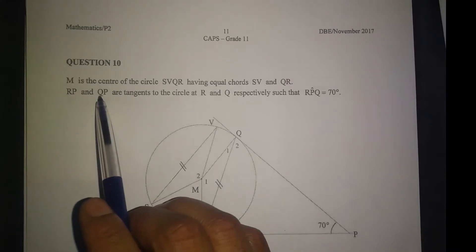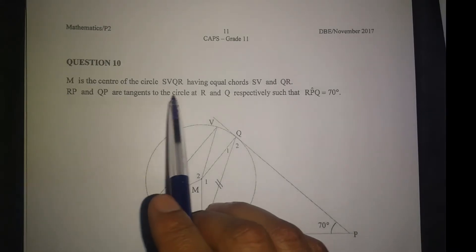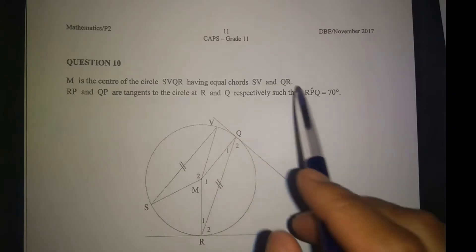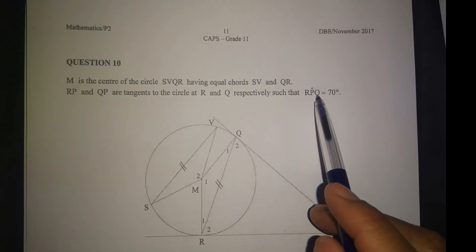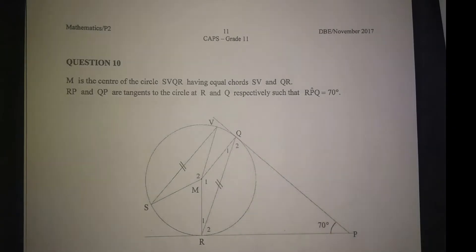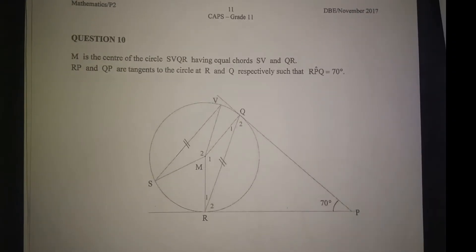And R, P and Q, P are tangents to the circle at R and Q respectively such that R, P, Q is equal to 70 degrees. This angle is equal to 70 degrees.